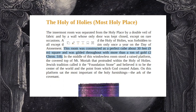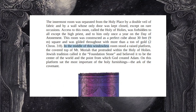We've noted before that the only other perfect cube in the Bible is the new heavenly Jerusalem, which comes down from God from heaven to earth. I think symbolically what it's getting at is the entire creation — everything is now the most holy place, everything is now the Garden of Eden. There are no more domain differentiations. He says in the middle of this windowless room stood a raised platform — the covered top of Mount Moriah that protruded within the Holy of Holies. Jewish tradition called it the foundation stone and believed it to be the center of the world and the point from which God created Adam. On this platform sat the Ark of the Covenant.